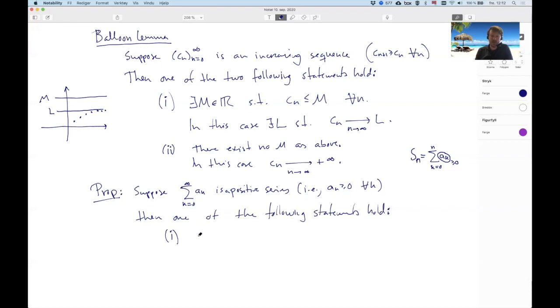So if I have a positive series, then well, one, either there exists an m in R, such that the partial sums are less than m for every n. And in this case, this guy converges, right? The infinite series converges.